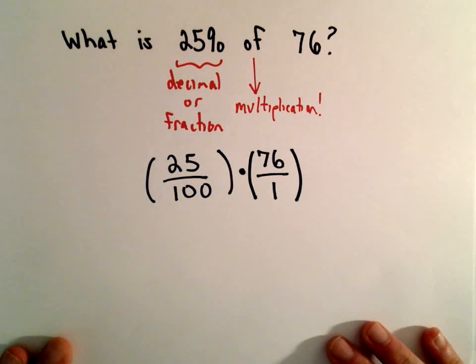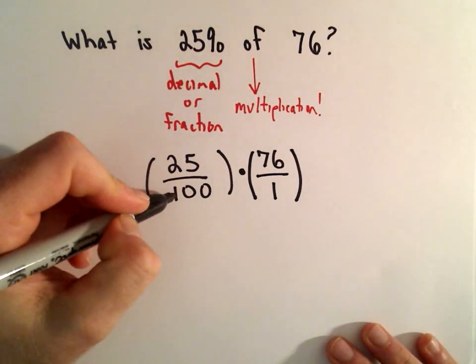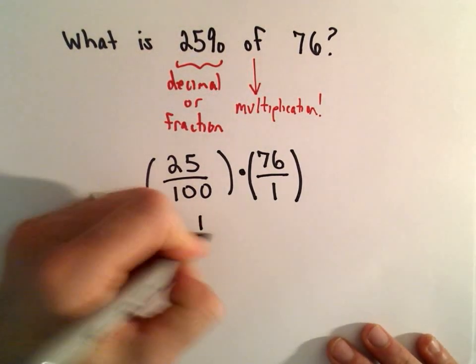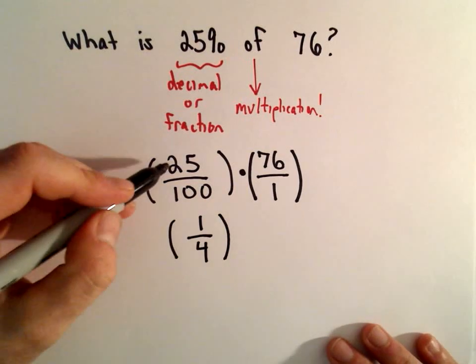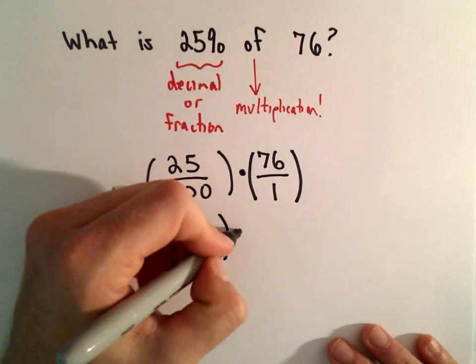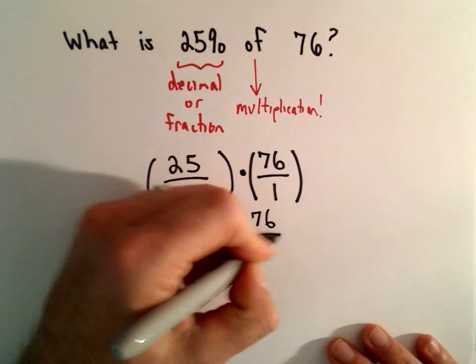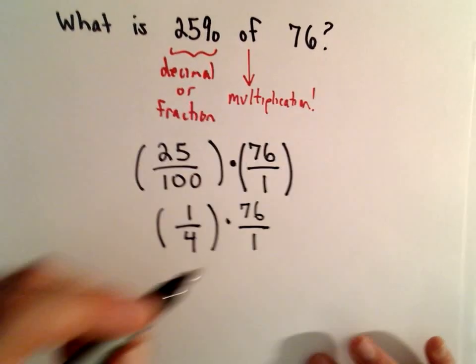And now we can just start simplifying. So 25 over 100, that would actually reduce to 1 over 4 if we divide top and bottom by 25. So multiplied by 76 over 1.